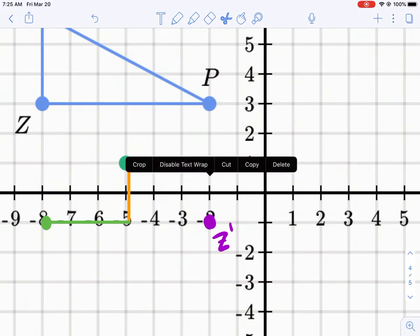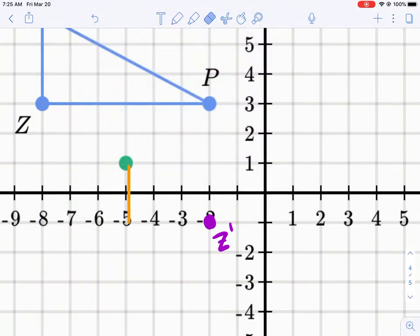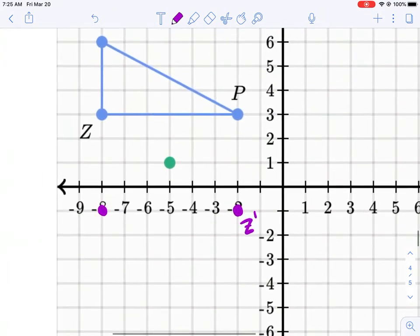So now let me switch back to my pen. My new point is at negative eight, negative one. And this makes sense because remember how Z and P up here are right in line. Z and P prime should be right in line with each other also. So Z prime and P prime need to be in line.